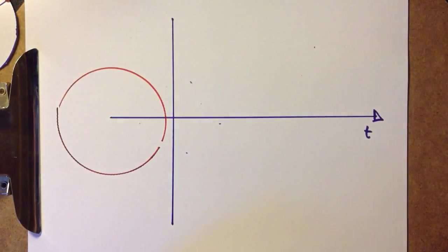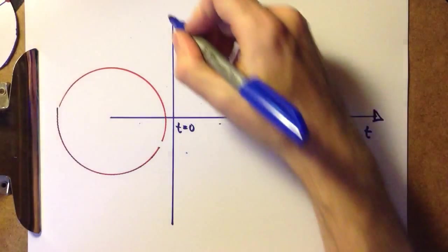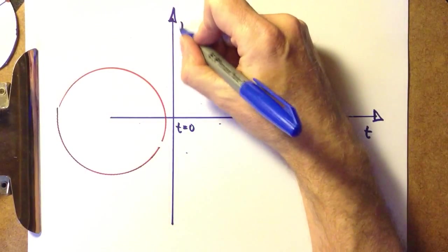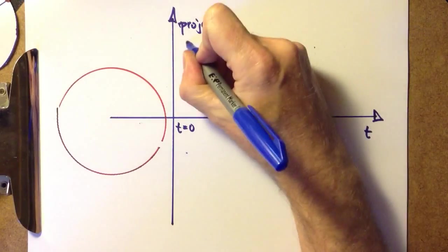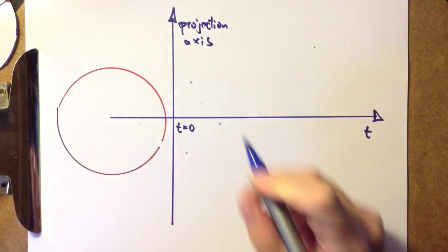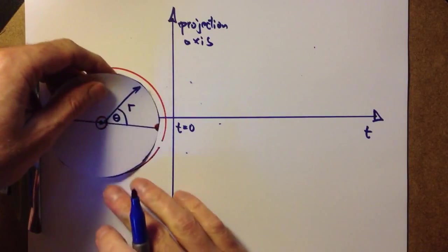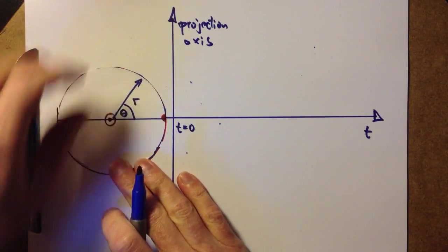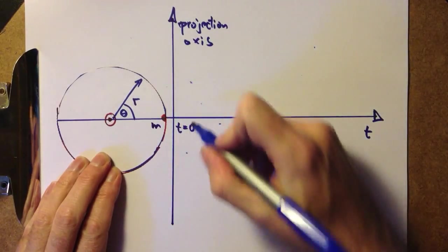T equals zero, and the axis we call the projection axis, or alternatively the projection plane. Because what we want to do is follow the motion of this mass, M, as a function of time.